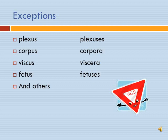Of course, as is usual with most rules, there are always exceptions. Some examples: plexus becomes plexuses, adding ES. Corpus becomes corpora — the US becomes an A. Viscus becomes viscera, which changes the entire word. Fetus becomes fetuses — just add ES. There are many exceptions, so until you're really confident with them, you'll want to look up your words.